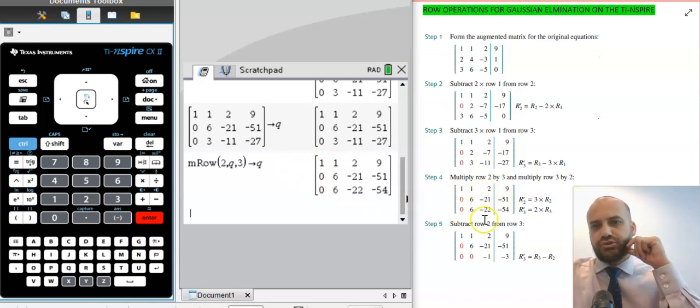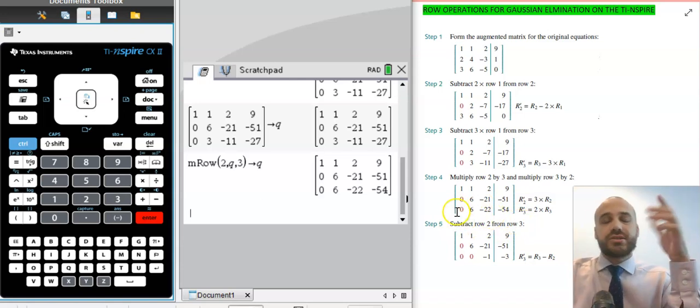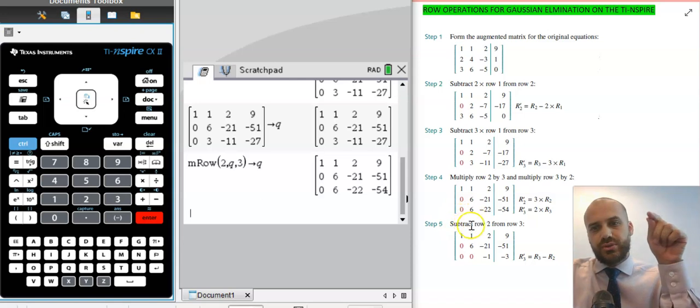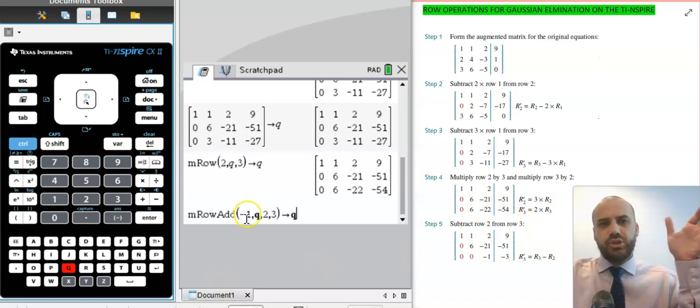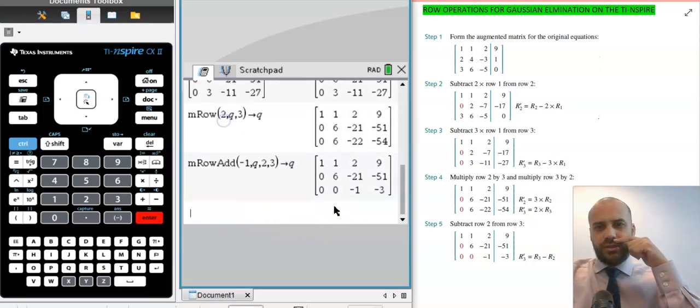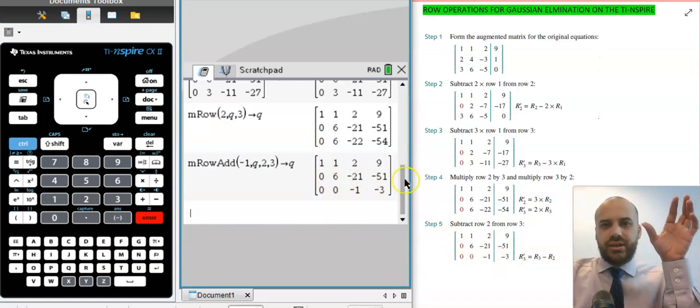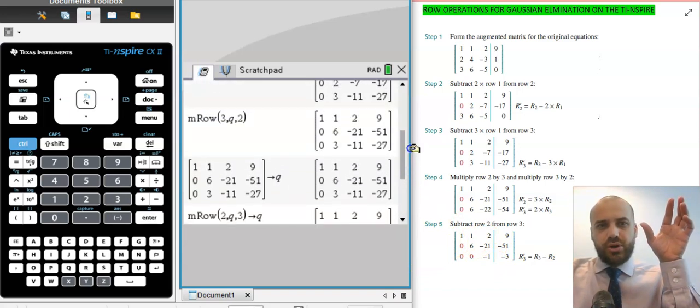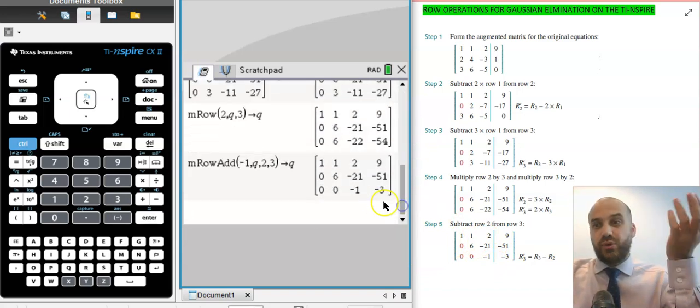And then finally, we're going to subtract row 2 from row 3. Of course, we don't have a subtract function here, so what we're going to have to do is multiply row 2 by negative 1 and add it to 3. Multiply by negative 1, matrix Q, we're going to multiply row 2 and add it to 3. And when we do that, we get this, which should look exactly like that. So there are our row operations for matrices.